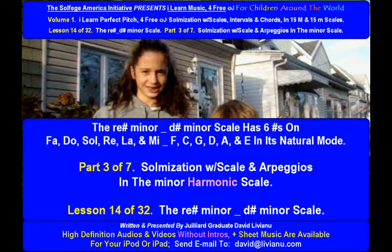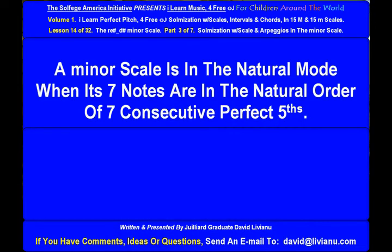The Re-sharp / D-sharp minor scale has 6 sharps on Fa, Do, Sol, Re, La, and Mi — that is F, C, G, D, A, and E — in its natural mode. A minor scale is in the natural mode when its 7 notes are in the natural order of 7 consecutive perfect fifths.